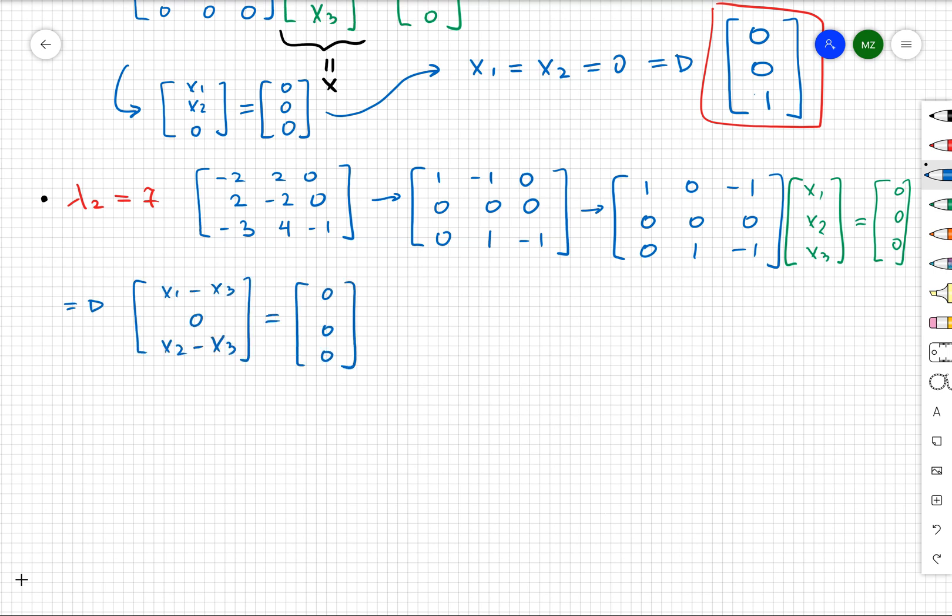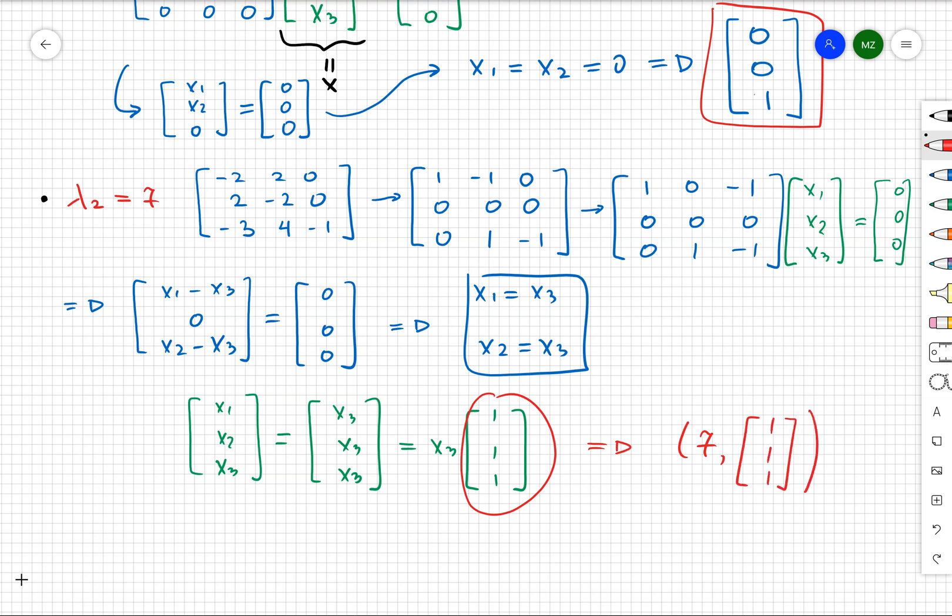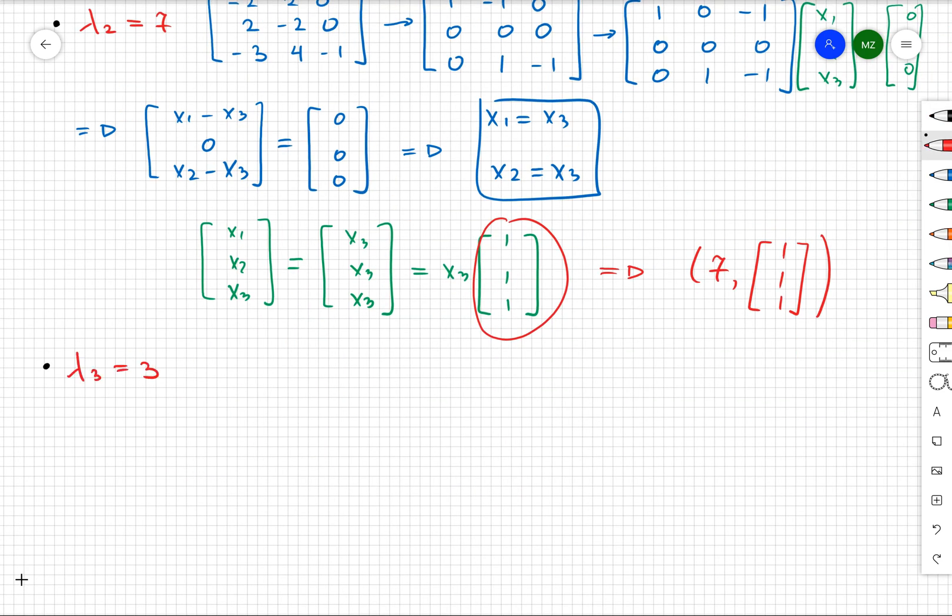After multiplication of matrix and the vector on the left-hand side, I will get that x₁ = x₃ and x₂ = x₃. So I will obtain that my eigenvector is actually going to be [1, 1, 1]. So my eigenvalue and eigenvector is 7 and [1, 1, 1].